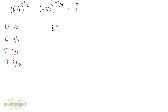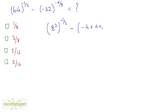We can write this as 8 squared raised to minus 1 by 2, minus minus 32. Now, minus 32 can be written as minus 4 times 8, and 8 can be written as 4 times 2, and these 4s as 2 times 2, and this 4 as 2 times 2 times 2. So basically minus 32 is the fifth power of 2, i.e., minus 2 raised to the power of 5.